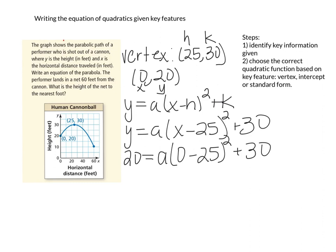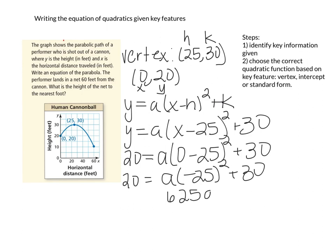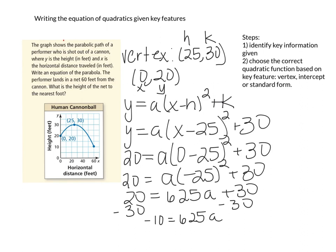So: 20 equals a times (0 minus 25) squared plus 30. Let's finish solving this. 20 equals a times negative 25 squared plus 30. Negative 25 squared is 625, so 625a plus 30 equals 20. Subtract 30 from both sides and we get negative 10 equals 625a. Then we divide by 625. Plugging into my calculator: negative 10 divided by 625 gives negative 0.016.